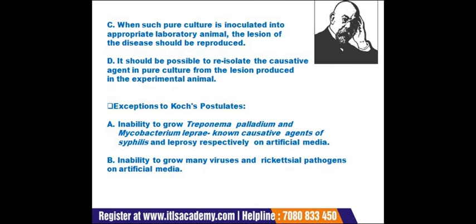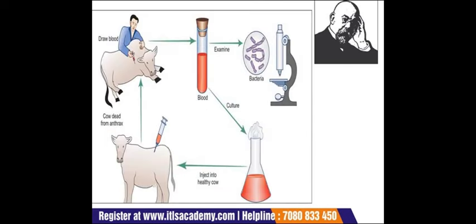There are some exceptions to Koch's postulates: the inability to grow Treponema pallidum and Mycobacterium leprae, the causative agents of syphilis and leprosy. Also, the inability to grow many viruses and rickettsial pathogens on artificial media. Koch's main framework involves isolating the organism, culturing it in pure culture, inoculating a healthy animal, and re-isolating the organism — this is the main framework of Koch's postulates.